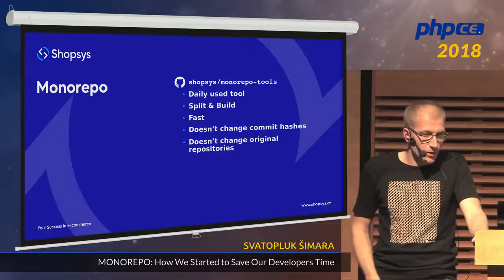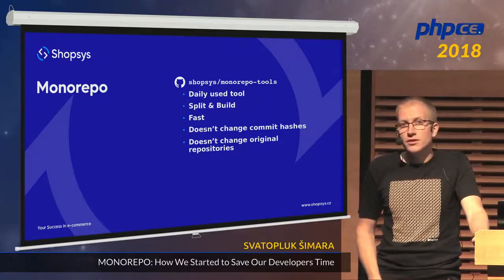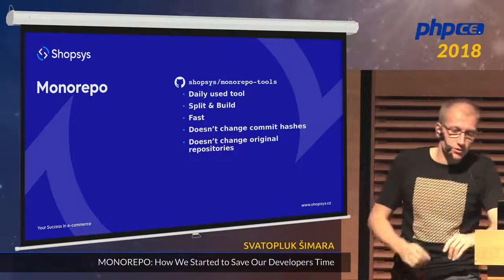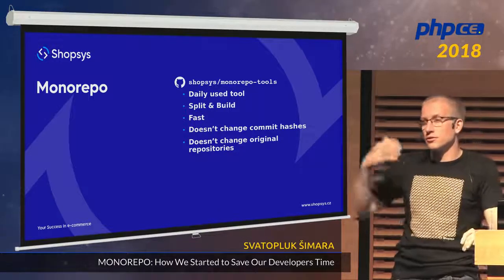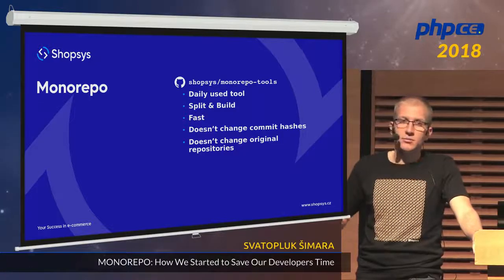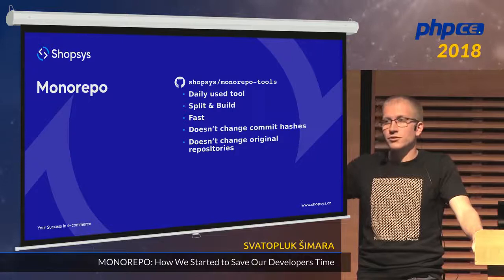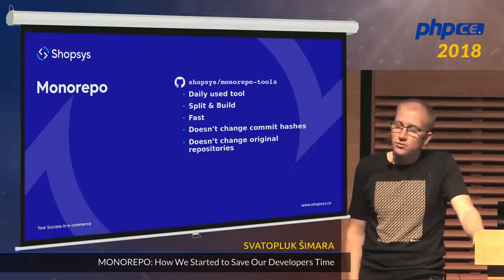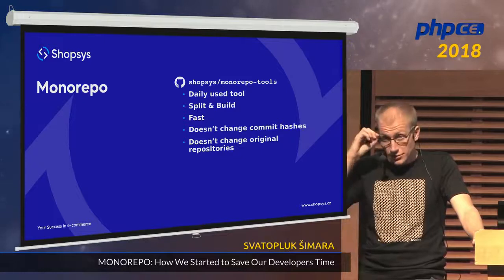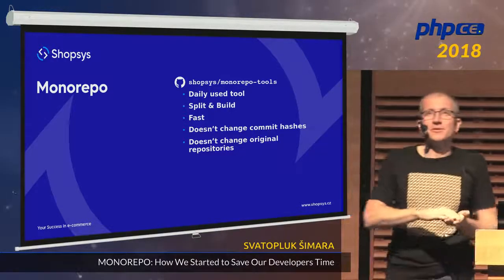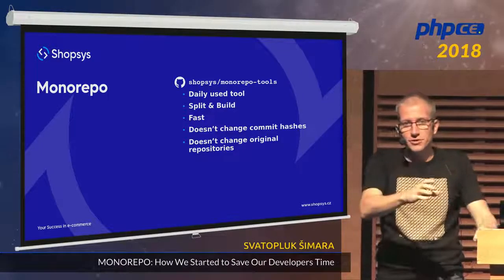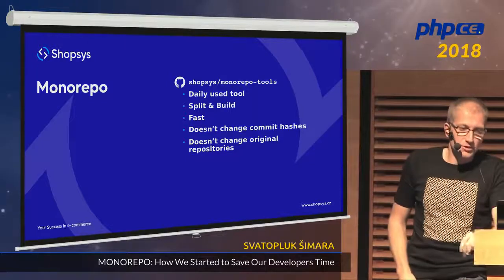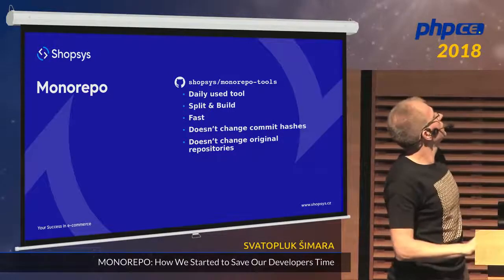This was important because we were already open source with packages used by users. If we had to force push after the split, users might run into trouble. The tool also deals with git tags — all our packages are tagged by the same version, so you can be sure that in a given version all packages cooperate well. The tool can split tags too, though there's one small issue: if no changes occur between versions in a package, it will still tag it with the new tag.